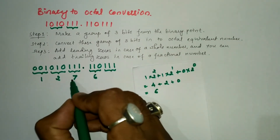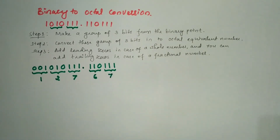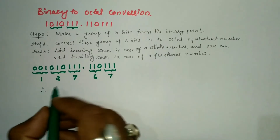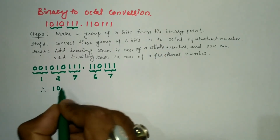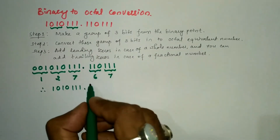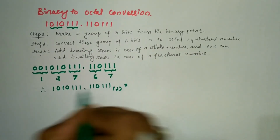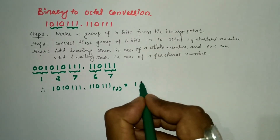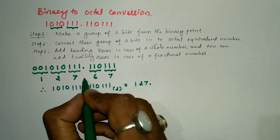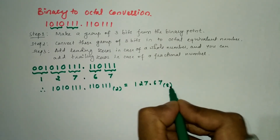Similarly, the group 1, 1, 1 directly gives us 7. Therefore, the binary number 1, 0, 1, 0, 1, 1, 1 . 1, 1, 0, 1, 1, 1 to base 2 is equal to 1, 2, 7 point 6, 7 to base 8.